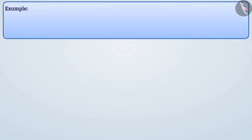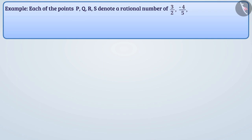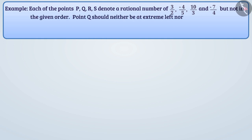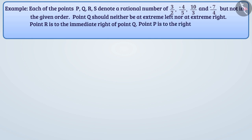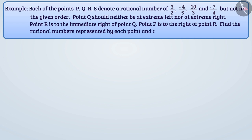Next example: each of points P, Q, R, S denotes a rational number from 3 by 2, minus 4 by 5, 10 by 3, and minus 7 by 4, but not in the given order. Point Q should neither be at extreme left nor at extreme right. Point R is to the immediate right of point Q. Point P is to the right of point R. Find the rational numbers represented by each point and arrange them on the number line. Pause the video and try to solve this puzzle by yourself.